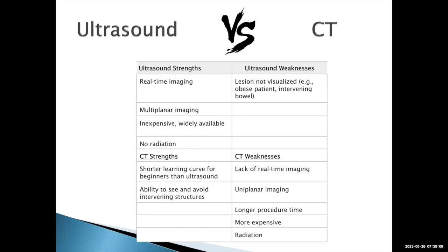CT procedures are generally easier to teach — they have a shorter learning curve, and it's much easier to see and avoid intervening structures with CT. With ultrasound, you can put pressure on the abdomen and co-aptate the bowel, making it invisible, and you could accidentally go through bowel. CT gives much more precise definition of intervening structures. However, we cannot use ultrasound for all procedures — patient body habitus and intervening bowel sometimes prohibit an ultrasound approach and require CT instead.